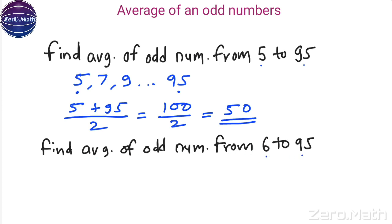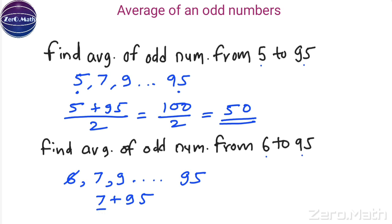Let us twist it further. Find the average of odd numbers from 6 to 95. Is 6 an odd number? No. So the first odd number is 7, then 9, and so on till 95. Take the first odd number 7, add it to the last odd number 95, and divide by 2: 7 + 95 = 102, divided by 2 equals 51.